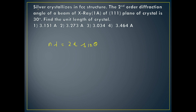Let's read the question first. Silver crystallizes in FCC structure. The second order diffraction angle of a beam of X-ray of wavelength 1 Angstrom is given for the (111) plane of the crystal as 30 degrees. Find the unit cell length of the crystal.